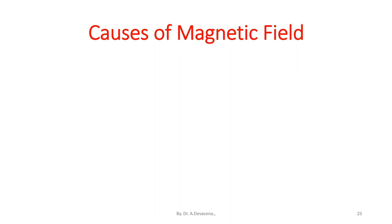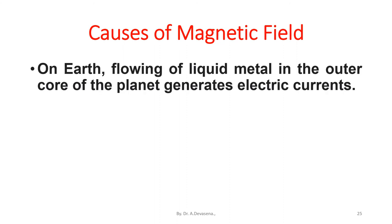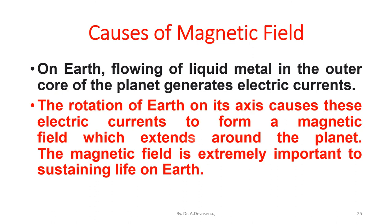The magnetic field is extremely important to sustaining life on earth. On earth, the flowing of liquid metal in the outer core of the planet generates electric currents. The rotation of earth on its axis causes these electric currents to form a magnetic field which extends around the planet.